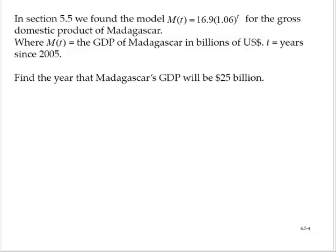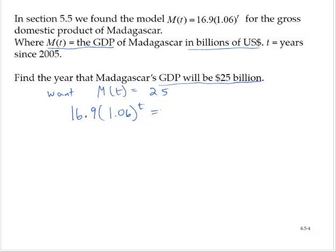So M of t is the GDP, and we want the GDP to be 25 billion. The GDP is in billions of dollars, so we want M of t to be equal to 25. And M of t is 16.9 times 1.06 to the t, and we need that to equal 25. So I'm going to solve this exponential equation — notice the variable is in the exponent.